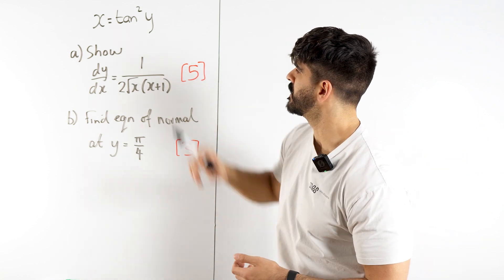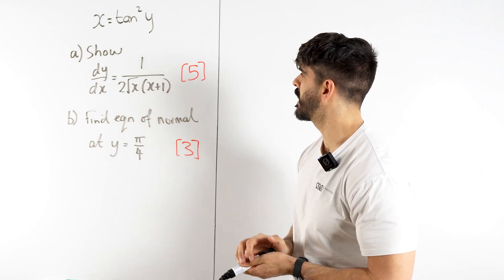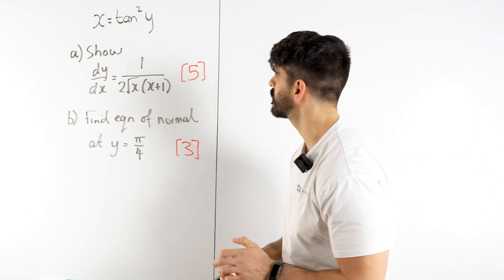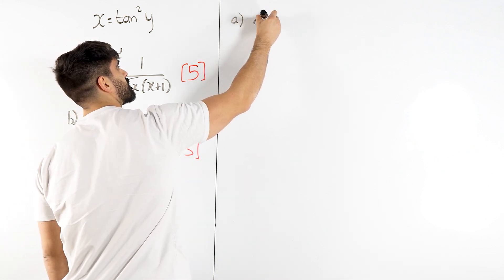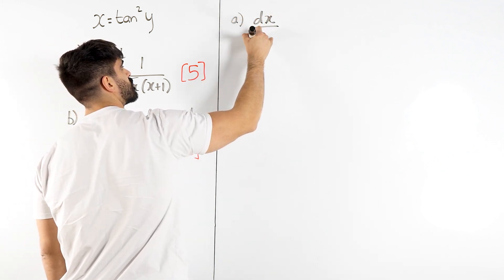So given this, how do we show that the gradient function is 1 over 2 root x, x plus 1 for 5 cheeky marks? Well because it's rearranged for x, we might as well differentiate x with respect to y.